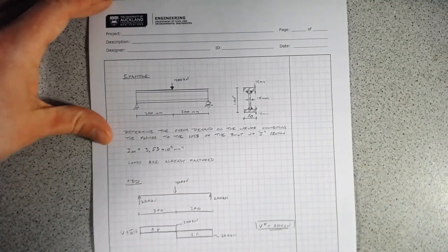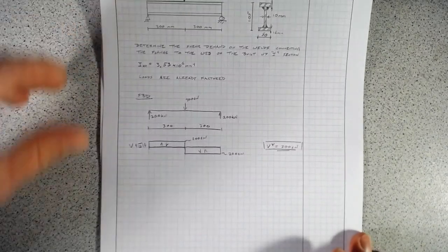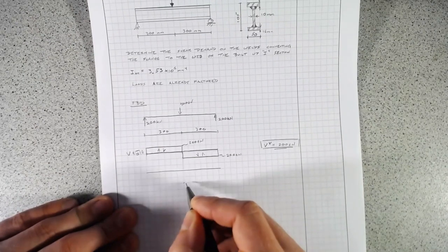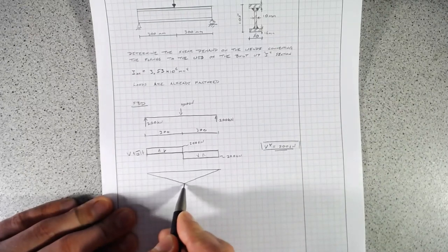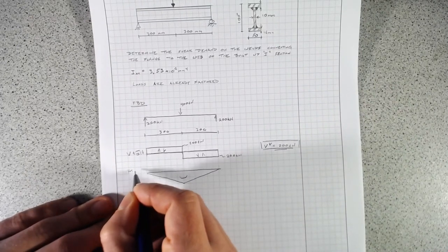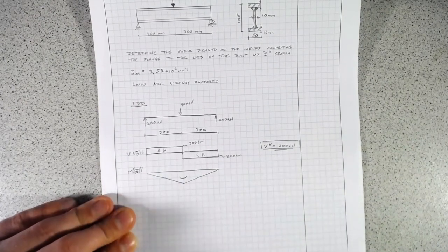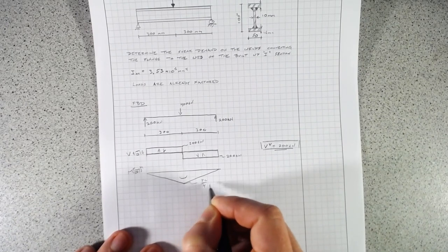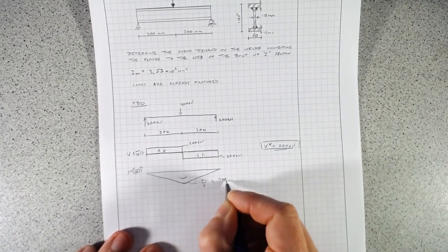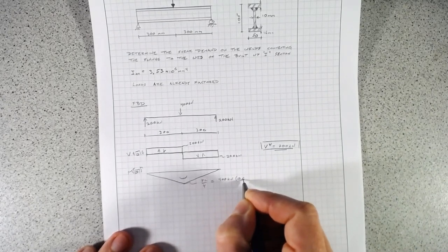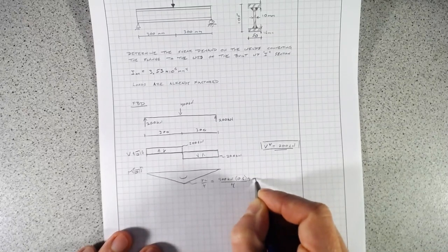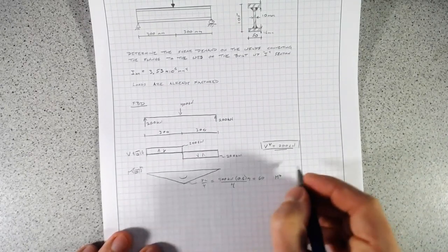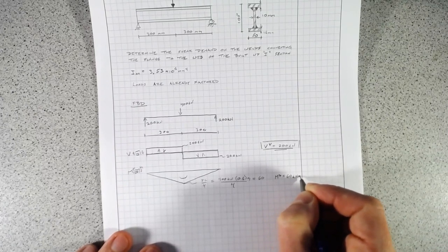We don't have to, but since we're here, we might as well draw our bending moment diagram. It's a convenient thing to have. Because we have constant shear, we'll have a linear distribution of bending moment there. That bending moment is just PL over 4, which equals 400 kilonewtons times 0.6 meters over 4. That equals 60. So our bending demand equals 60 kilonewtons meters.